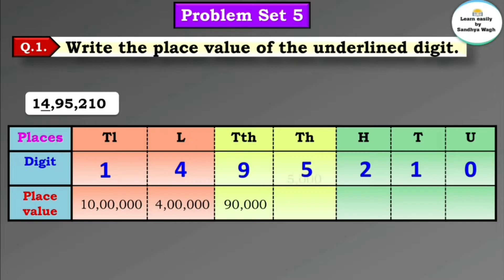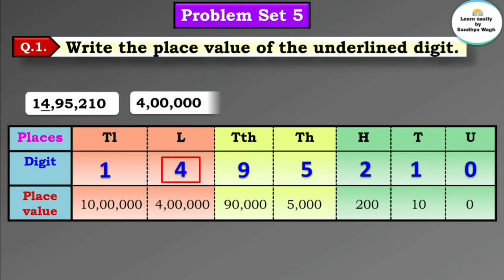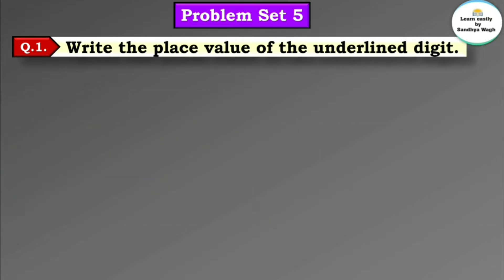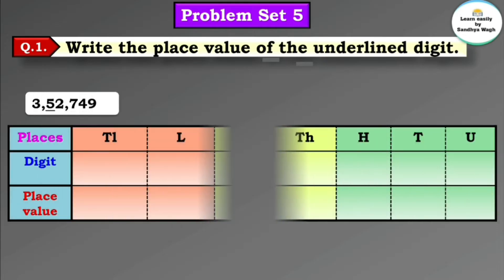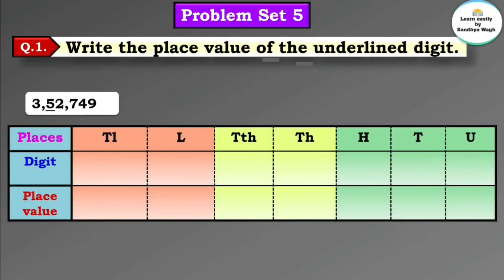The place value of 5 is 5,000, the place value of 2 is 200, the place value of 1 is 10, and the place value of 0 is 0. In the question you have been asked the place value of 4, so the place value of 4 is 4 lakh.